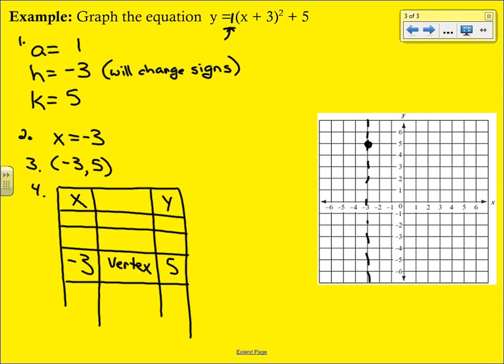Then you want to choose points on either side of that. So if you went a little bit smaller, you would have -4 and -5. If you went a little bit bigger, you'd have -1 and -2. It doesn't matter what order you put these in.